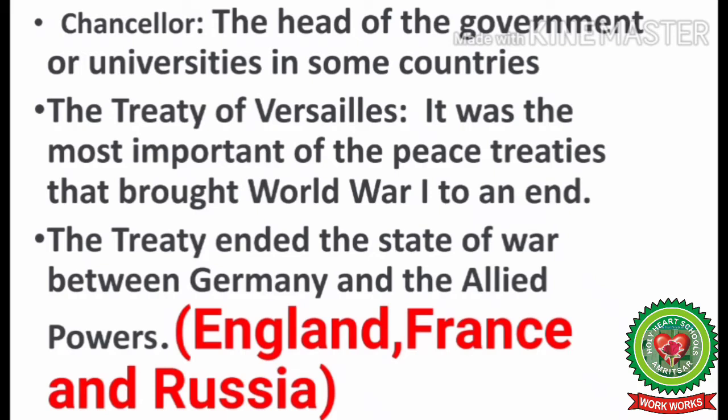The next term is the Treaty of Versailles. It was the most important of the peace treaties that brought World War One to an end. The treaty ended the state of war between Germany and the Allied Powers, which consisted of England, France, and Russia. A treaty was signed between both groups — the Allies comprising England, France, Russia, and later America, and the Central Powers comprising Germany, Austria-Hungary, and Turkey. This treaty was signed at a place called Versailles near Paris, so it was called the Treaty of Versailles.